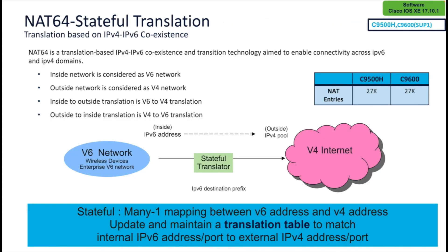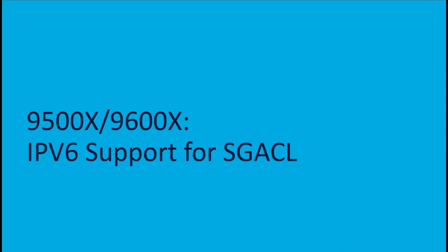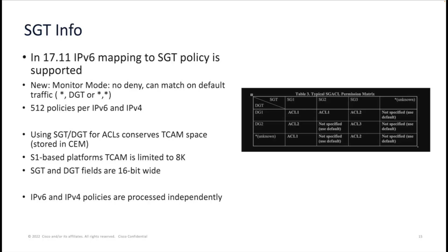With the transition to IPv6, most modern devices are IPv6 capable, but many older devices are IPv4 only. Starting with release 17.11.1, there is support for Prefix 64 in the IPv6 router advertisement, which allows IPv6 clients to receive NAT64 mapping via router advertisement. Another IPv6 feature introduced is IPv6 support for SGT-based security solutions on the 9500X and 9600X platforms, allowing for efficient use of switch resources in deploying IPv6 ACLs.